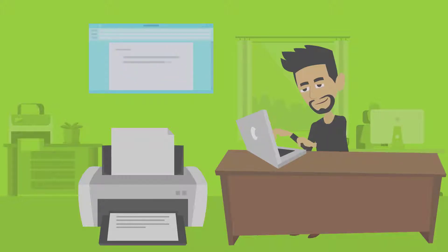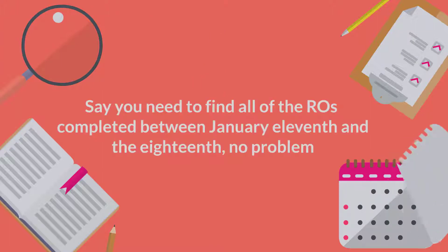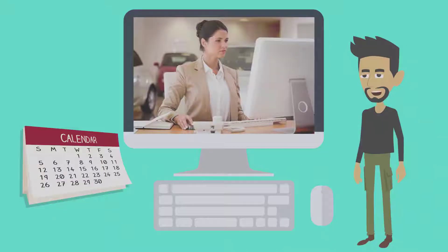Say you need to find all of the ROs completed between January 11th and the 18th—no problem. If you need to see all the ROs done for a particular VIN last year, you got it.